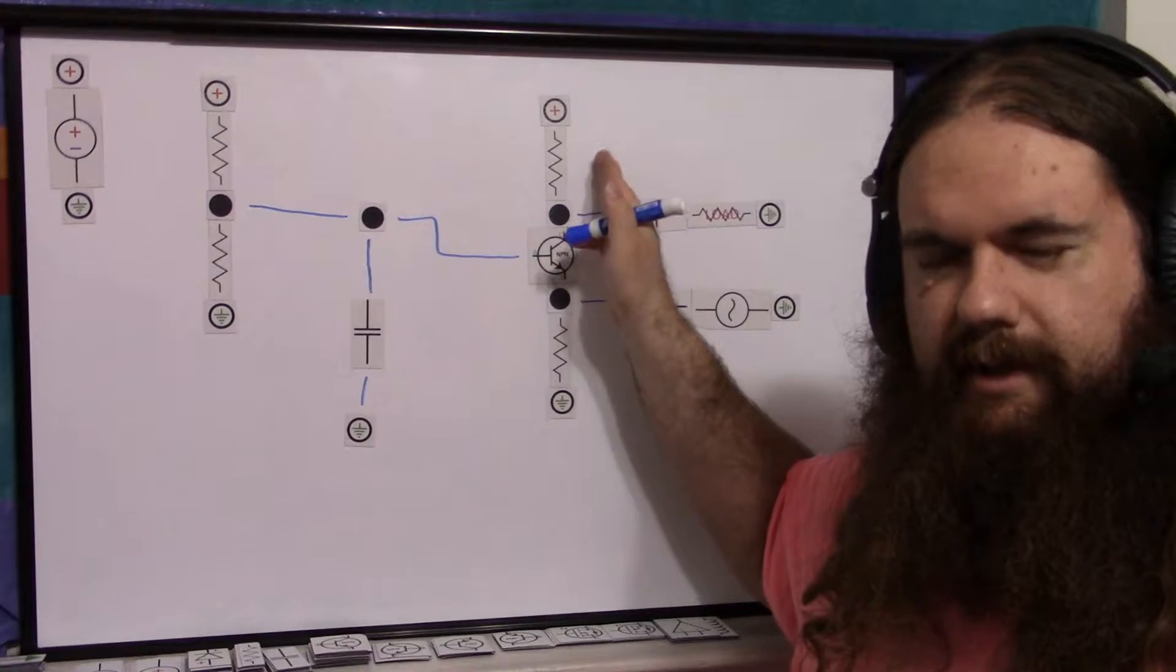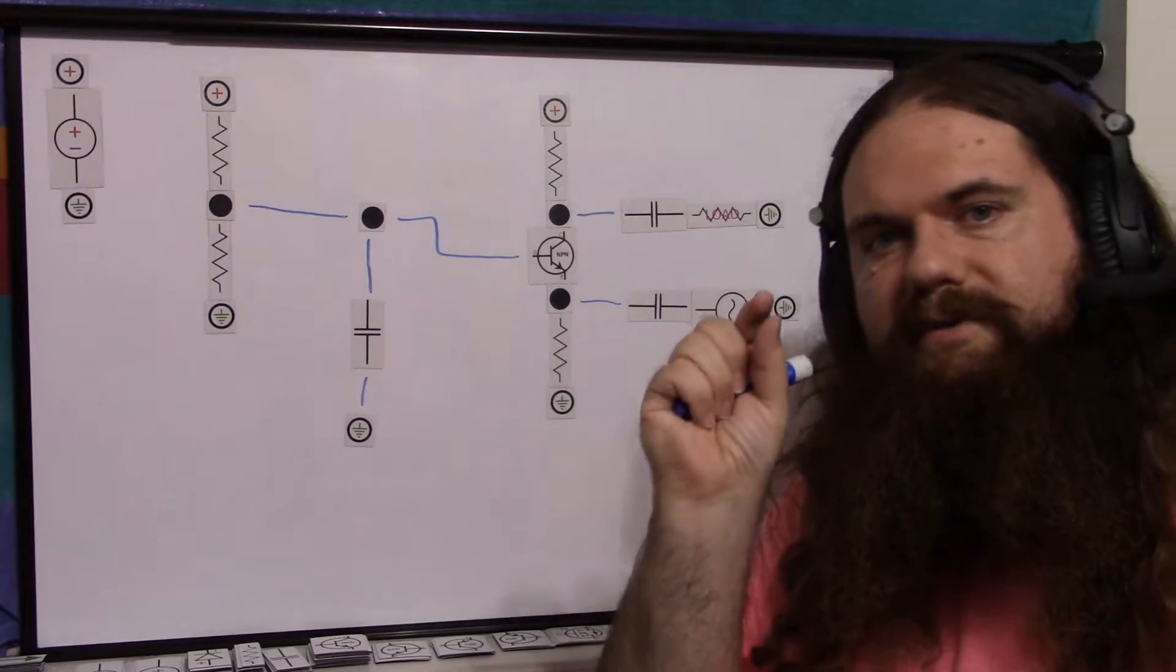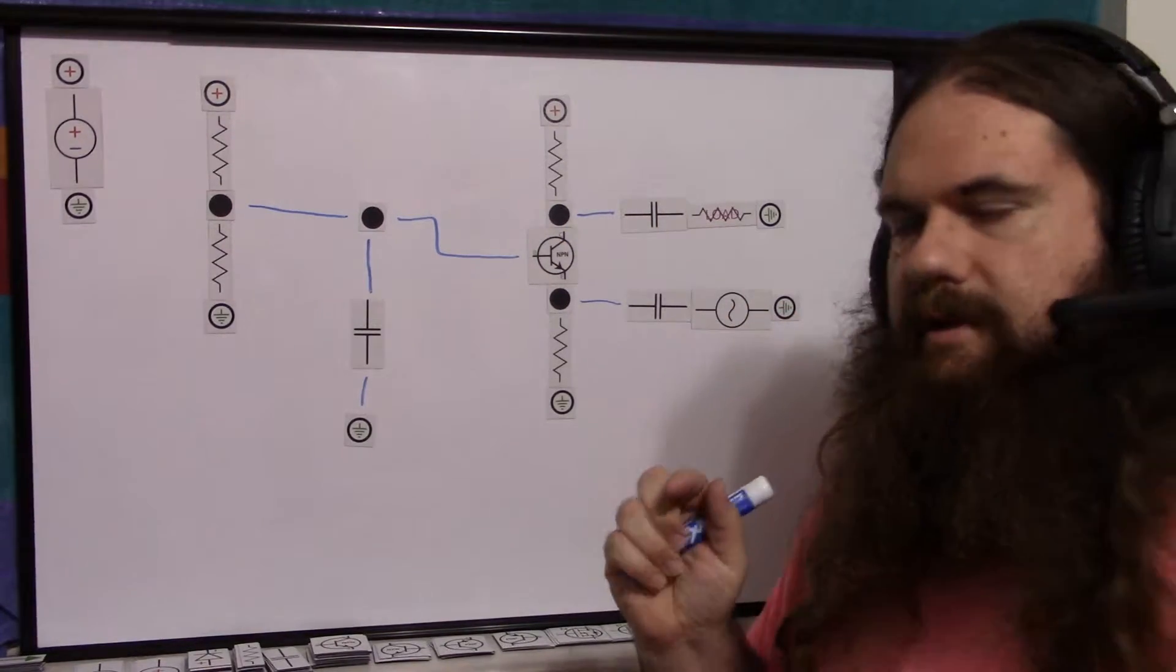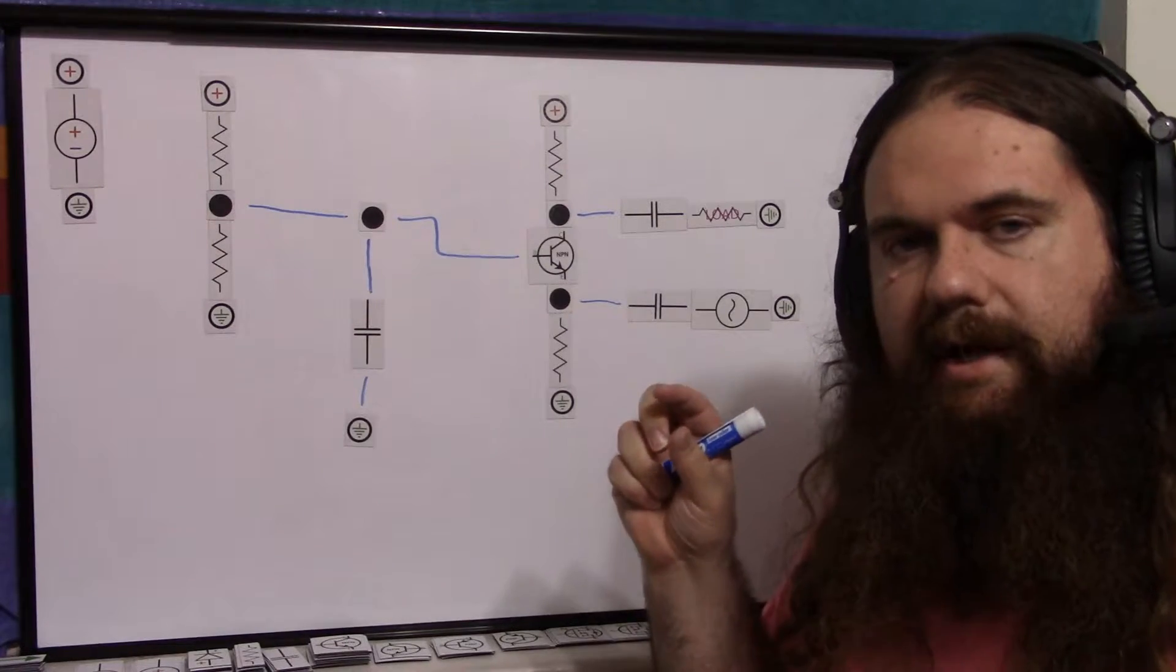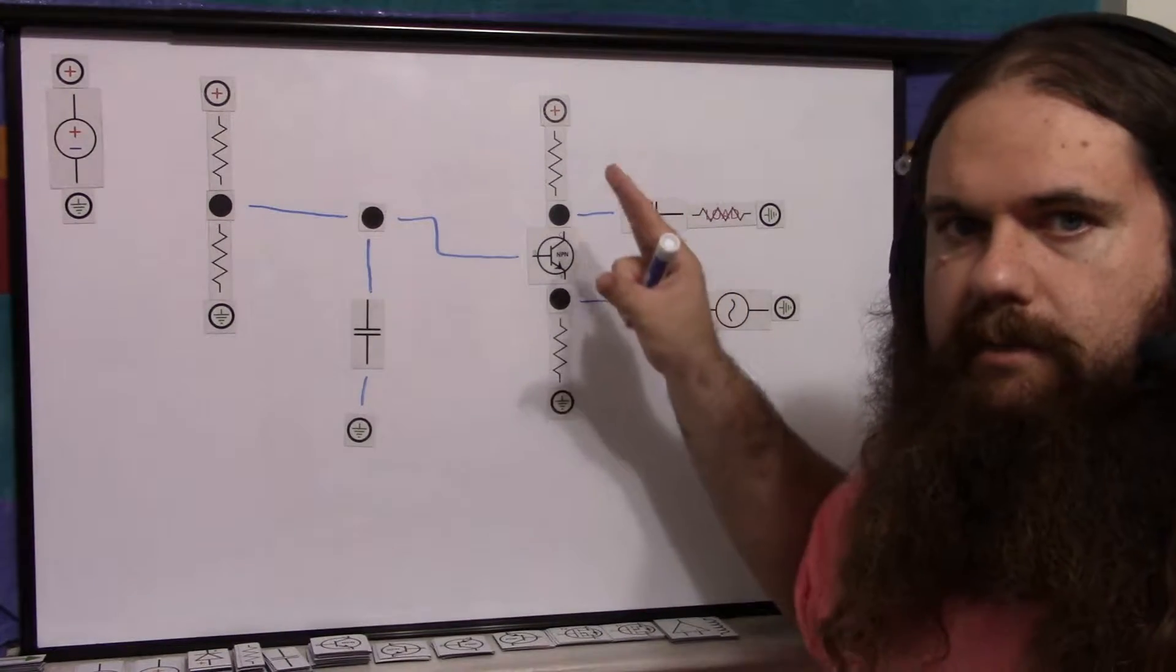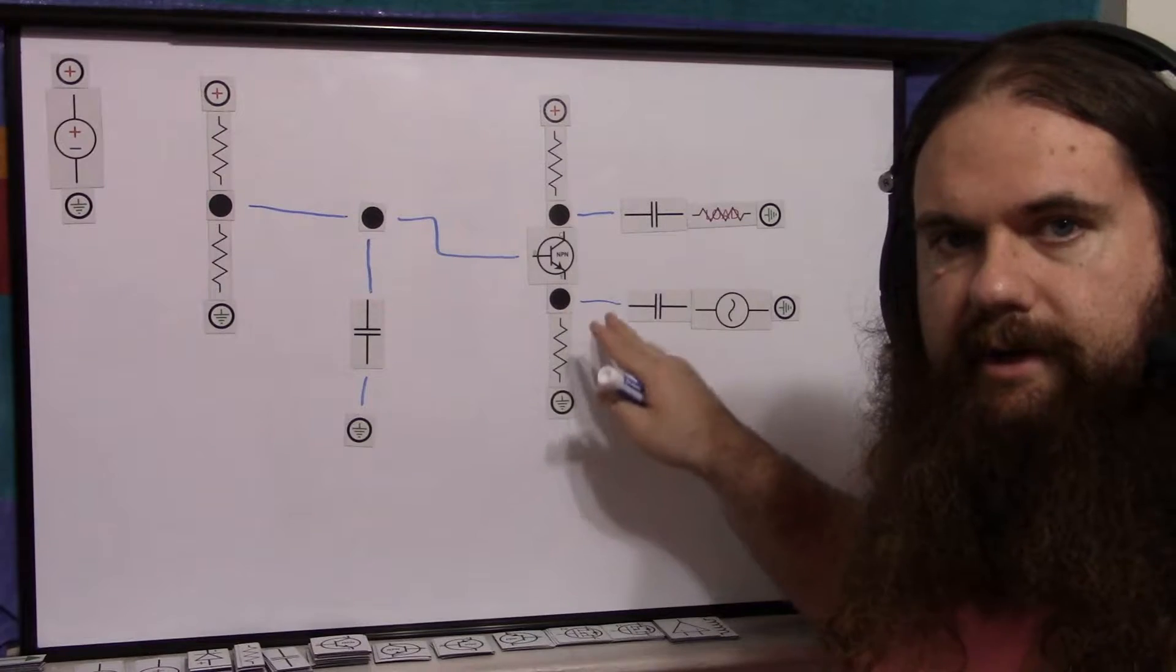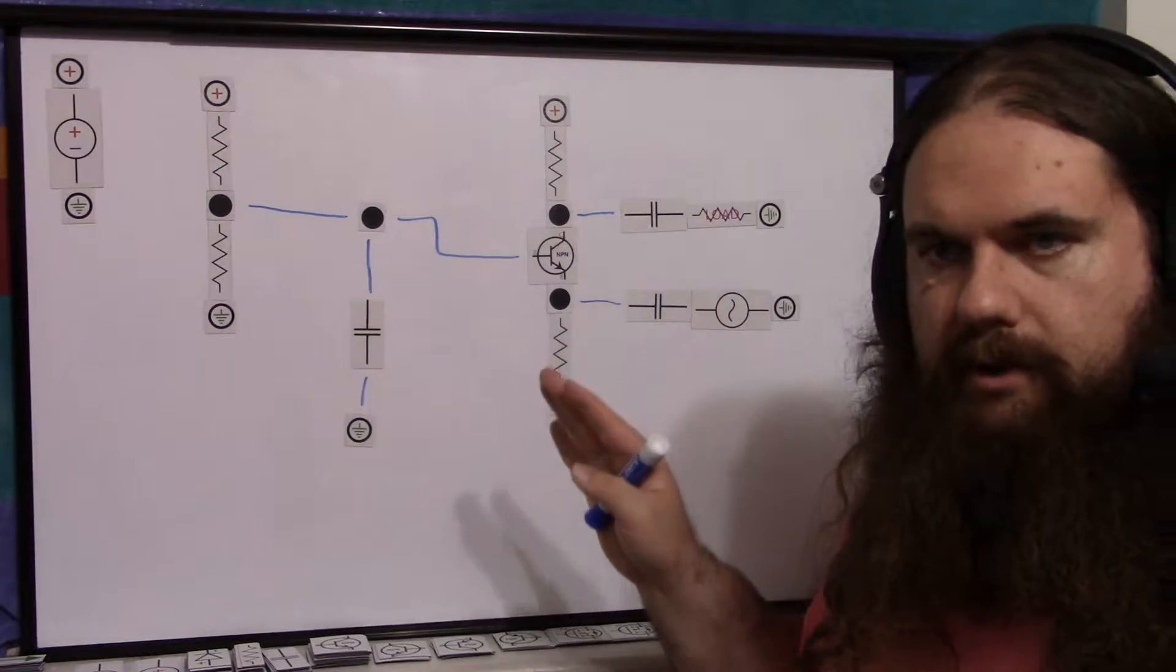And the emitter current is collector plus base current. So the collector current that's available to the output is going to be very, very slightly less than the emitter current. It won't be the same, but it'll only be slightly less. They'll be almost the same. So the current actually goes down a little bit, but mostly not at all.